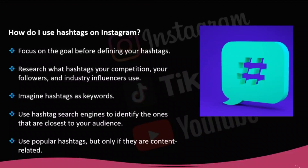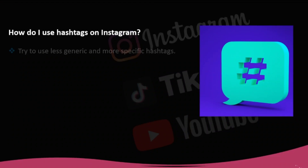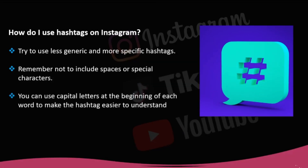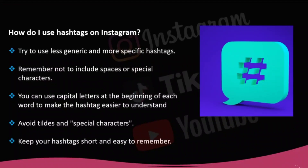If not, your followers will be disappointed and will stop following you. For instance, hashtag love is among the most effective hashtags on Instagram, but it wouldn't make much sense to use it in posts that don't relate to love. Try to use less generic and more specific hashtags. You can segment your content using hashtags that are related only to you. Remember not to include spaces or special characters. Numbers are allowed. You can use capital letters at the beginning of each word to make the hashtag easier to understand. Avoid tildes and special characters, as hashtags with characters other than Roman letters don't position themselves optimally. The ones with emojis don't position well either.